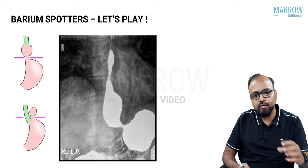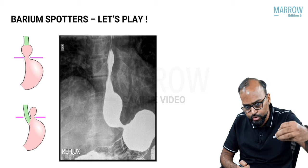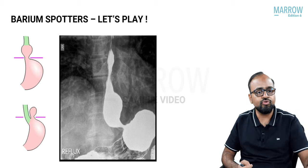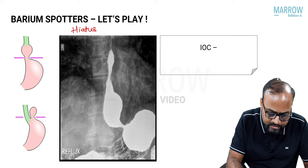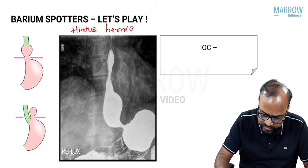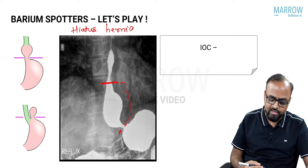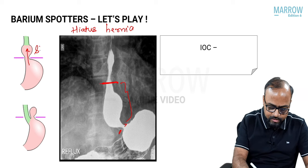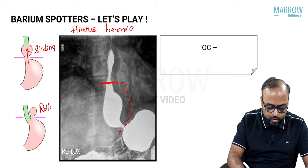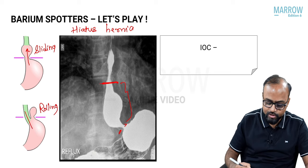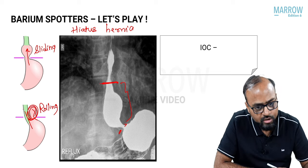When the gastroesophageal junction is at least more than two centimeters above the esophageal hiatus into the thoracic cavity, this is hiatus hernia. It can be a sliding type where the GE junction slides up through the hiatus, or a rolling type which is more dangerous — the GE junction remains normal but a small portion of the fundus slides up adjacent to it, with a higher probability of strangulation and complications.